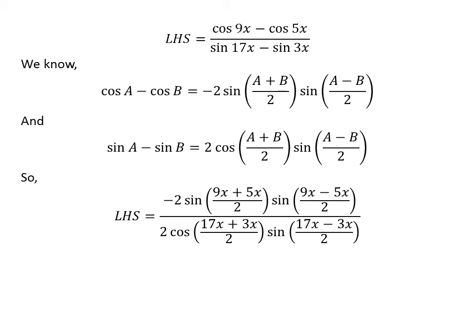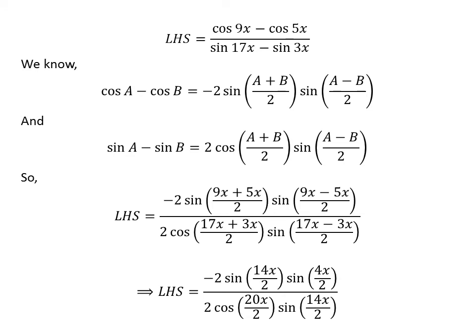Applying both identities, the left-hand side becomes: minus 2 times sine of (9x plus 5x)/2 times sine of (9x minus 5x)/2, all over 2 times cosine of (17x plus 3x)/2 times sine of (17x minus 3x)/2. Further simplification gives: minus 2 times sine of 7x times sine of 2x, upon 2 times cosine of 10x times sine of 7x.